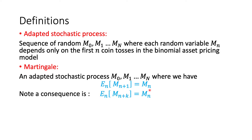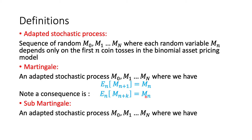A consequence of this martingale property is that if we stand at time n today and want our best guess of the random variable k time steps in the future, that is just the value of the random variable today. A sub-martingale is very similar to a martingale, but the only difference is that we expect the random variable to increase slightly as time goes by.